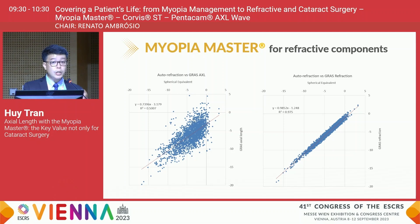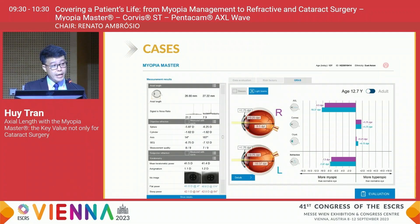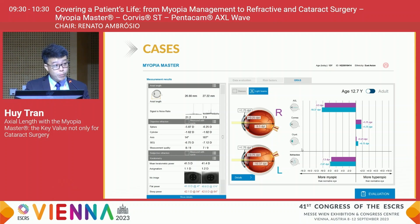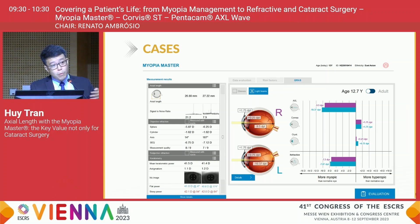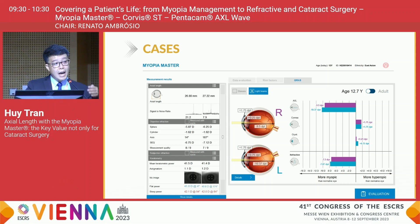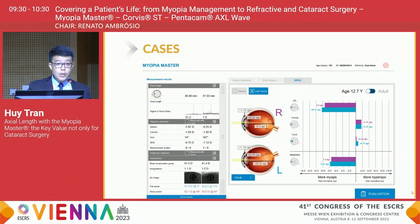However, the data also showed that the cornea and crystalline lens may also play a role in total refraction. For example, a 12-year-old girl came to our clinic with refraction of about minus 7.5 to minus 8 diopters in both eyes. But individually analyzing each refractive component — including the flat cornea and the slightly hyperopic crystalline lens — we observed that the axial myopia is estimated up to minus 9.5 to minus 10.5, significantly higher than the total refraction. Therefore, each patient should be individually managed after carefully reviewing the full set of parameters including age, risk factors, gender, axial length, spherical equivalent, and GRAS analysis.